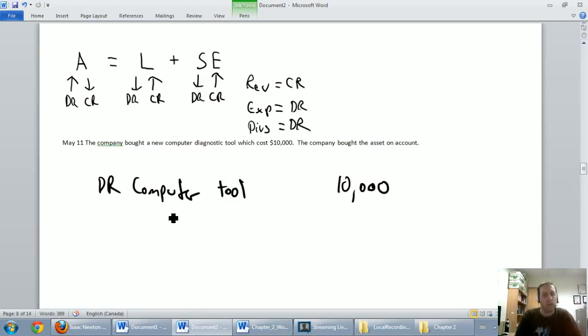Now, normally, we buy something, we credit cash if we pay cash. In this case, we bought the asset on account. That account payable is coming up again here. We have a liability. We owe these guys money. We owe them $10,000. It's a liability going up. That liability is increasing. So I'm going to credit my favorite credit, accounts payable. I credit that for $10,000. I'm going to put a date on this. My description would be purchase the computer diagnostic tool on account.